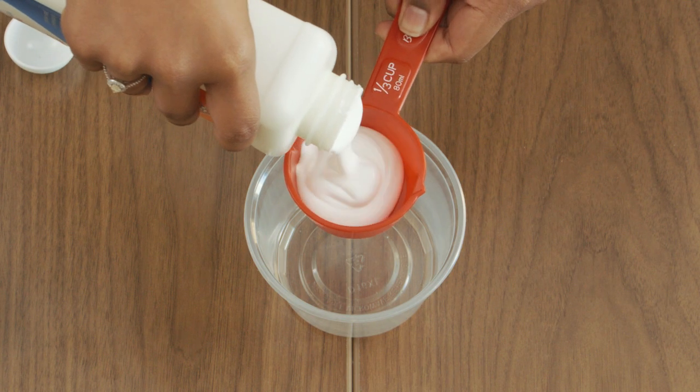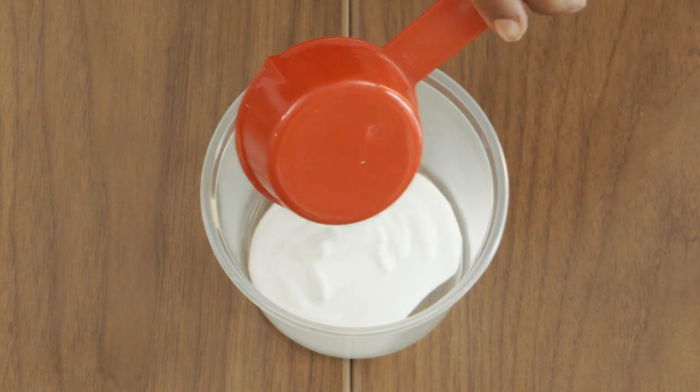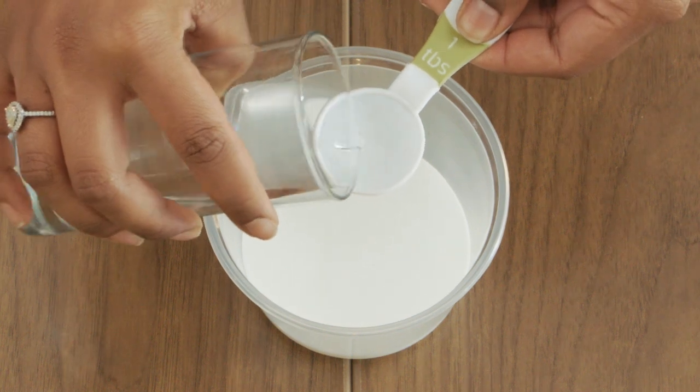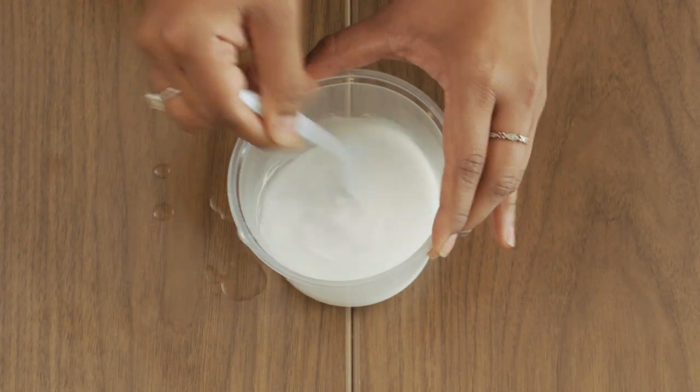Pour one-third cup of white glue into a plastic container. Add four tablespoons of water to the glue and stir thoroughly.